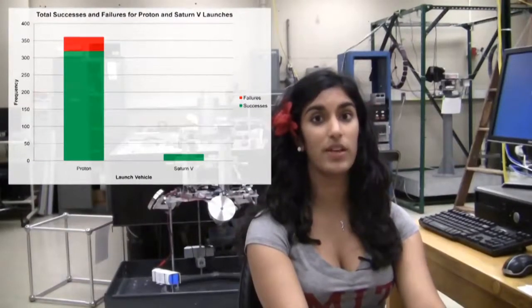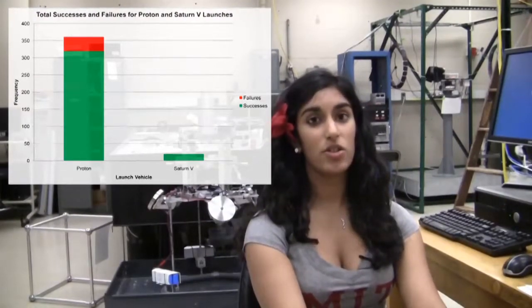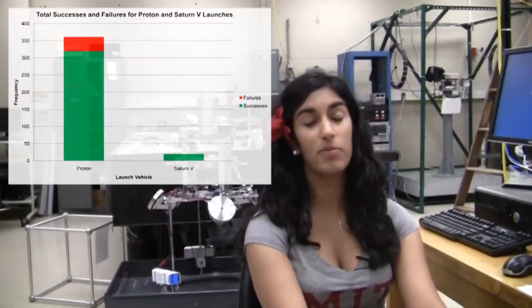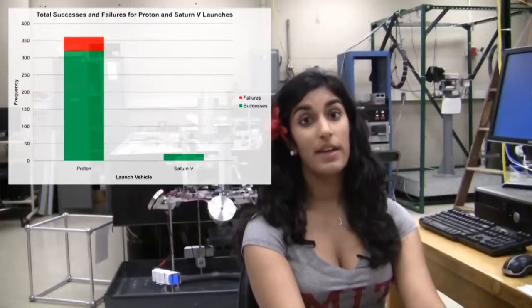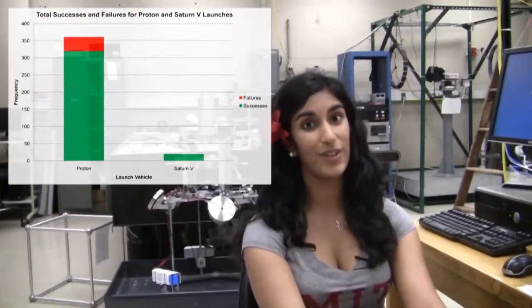If we make a stacked bar graph, however, we can plot all the launches from both the Proton and the Saturn V, but we can split them into successful and unsuccessful launches. Here we can see that the overwhelmingly large number of successful Proton launches was actually due to the fact that it had many more launches overall. In fact, the Saturn V had a perfect record, whereas the Proton had over 40 failures.